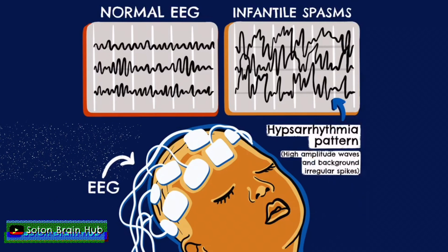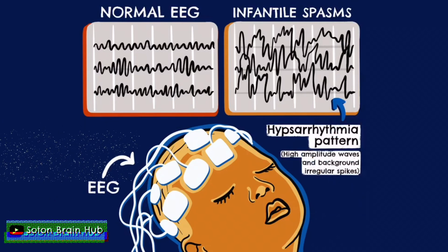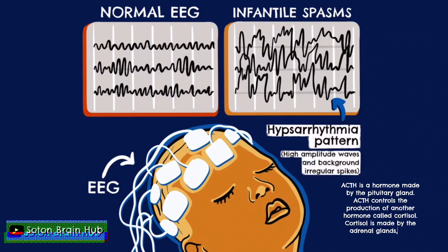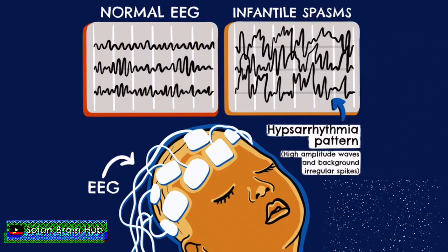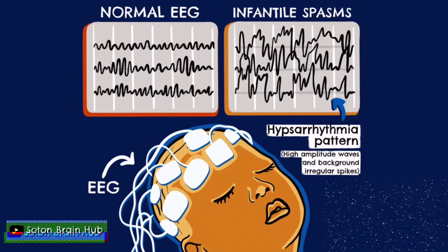Other treatment options include different types of hormonal therapy, including synthetic ACTH, also called tetracosactide. As previously mentioned, one third of children with tuberous sclerosis will suffer from infantile spasms. In these children, the first-line treatment is Vigabatrin.